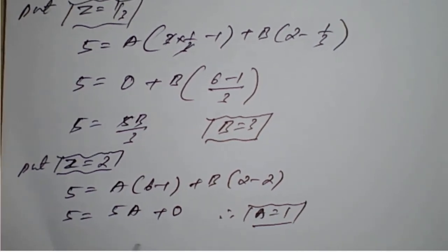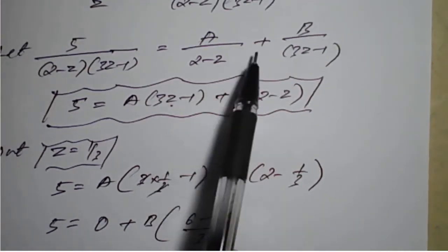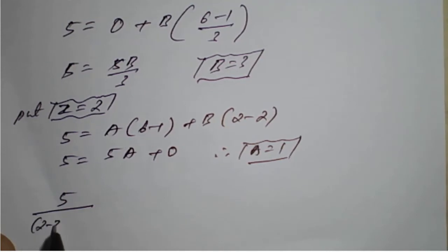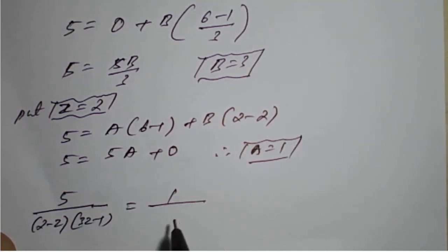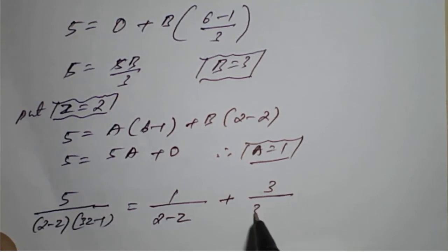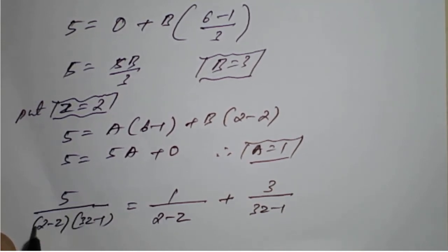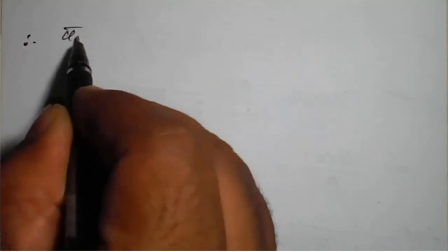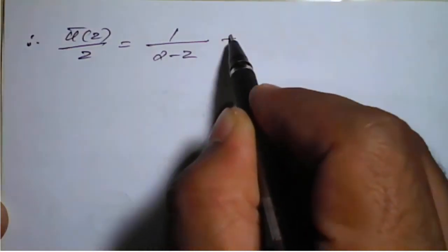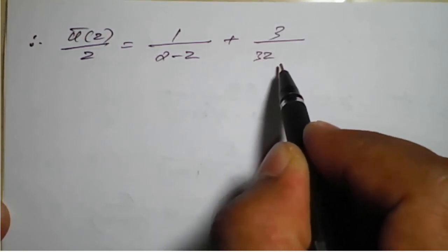Using A = 1 and B = 3, we substitute back: 5 divided by (2 minus z)(3z minus 1) equals 1 divided by (2 minus z) plus 3 divided by (3z minus 1). Since this expression equals u'(z)/z, we have u'(z)/z = 1/(2 minus z) + 3/(3z minus 1).